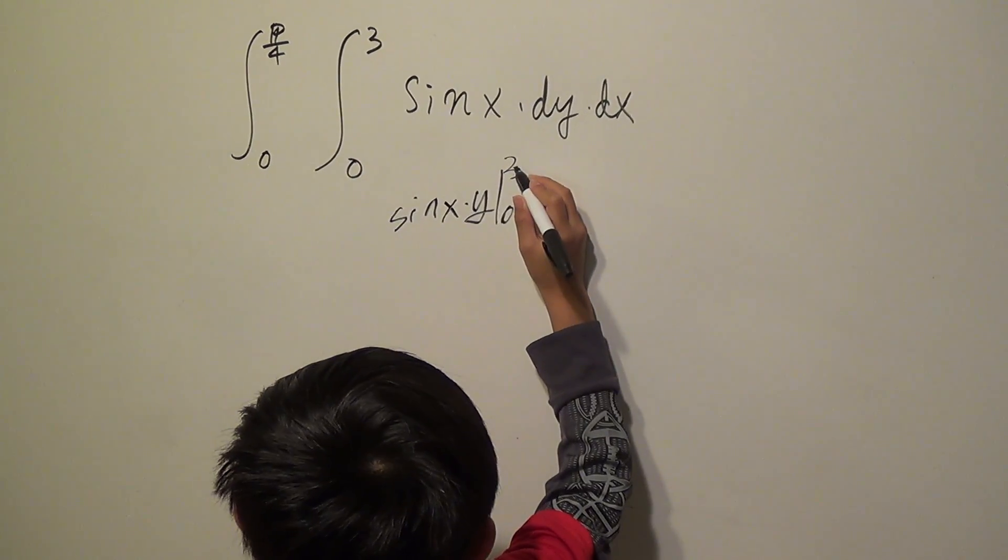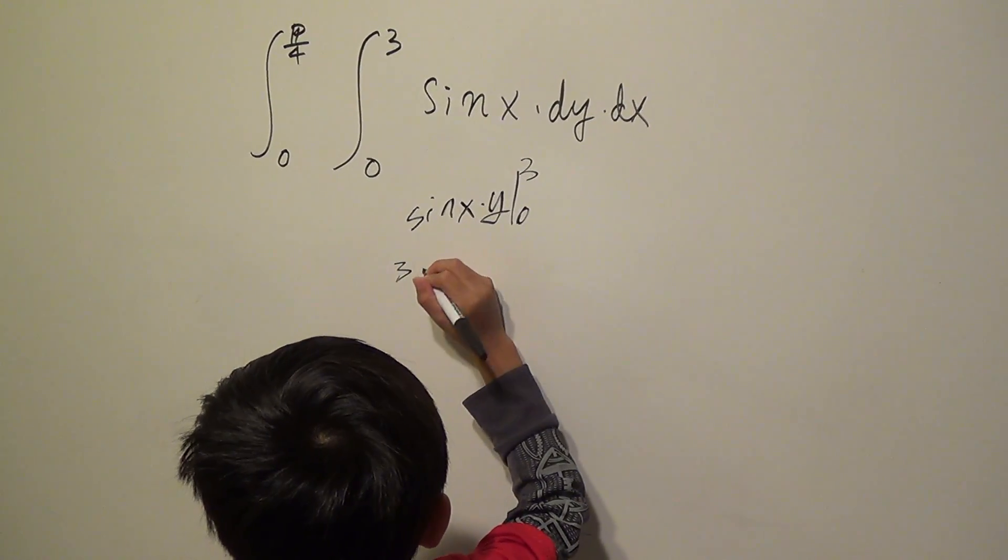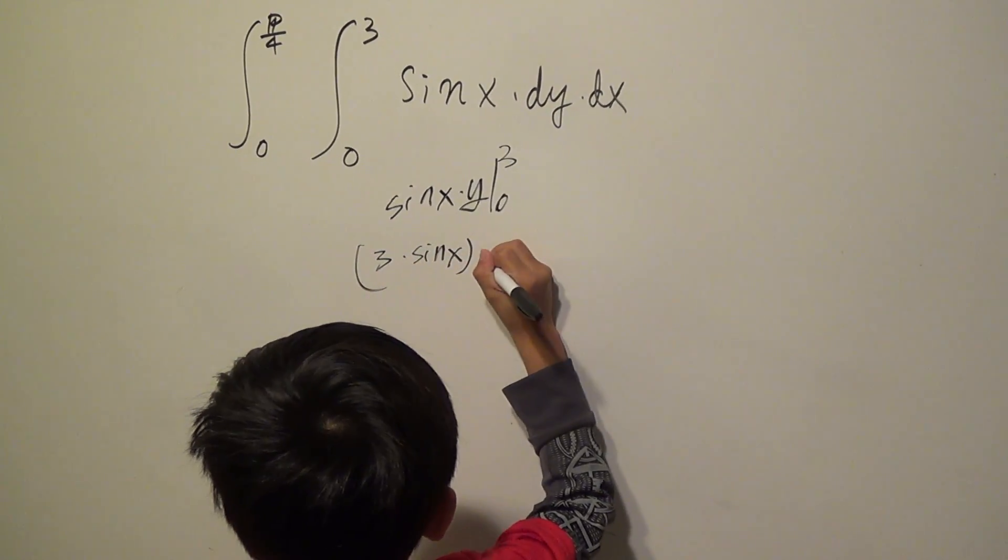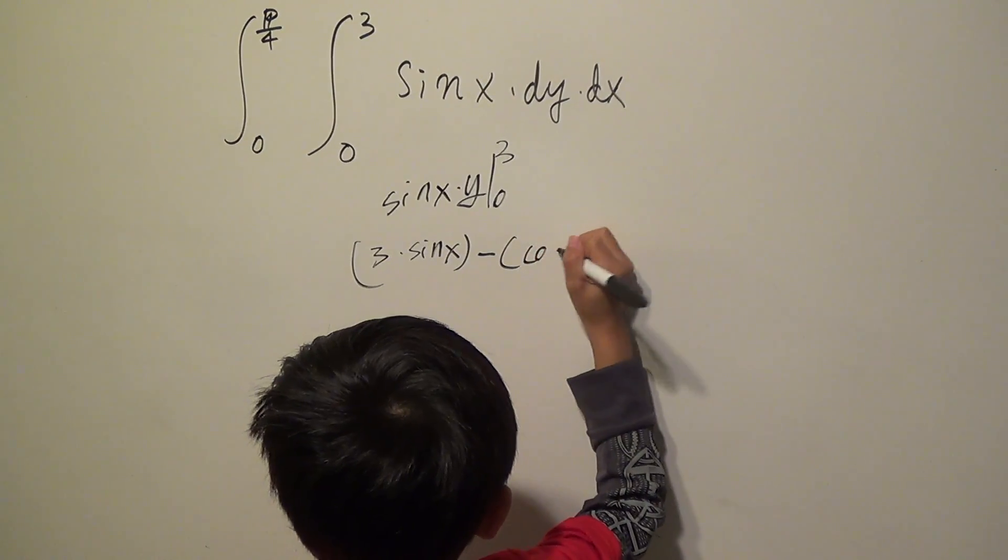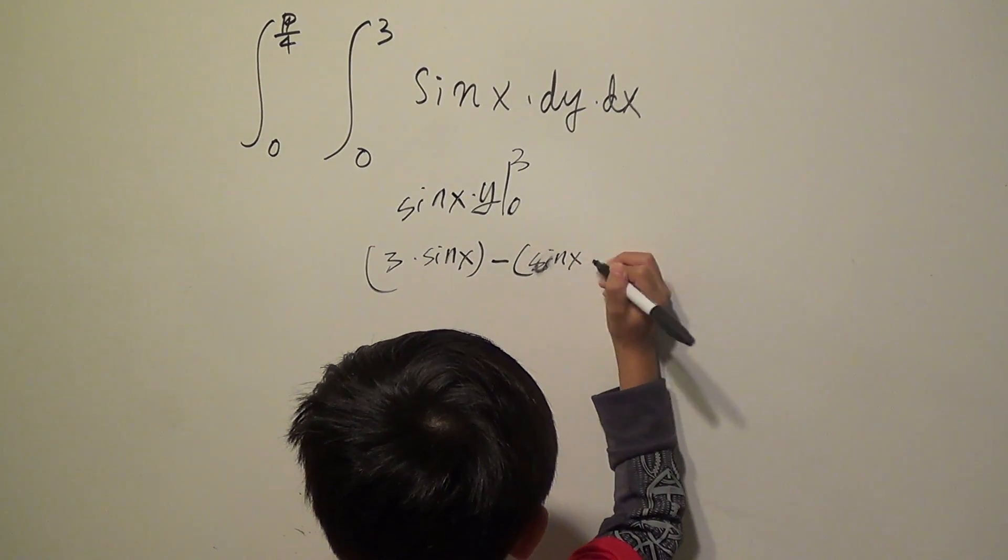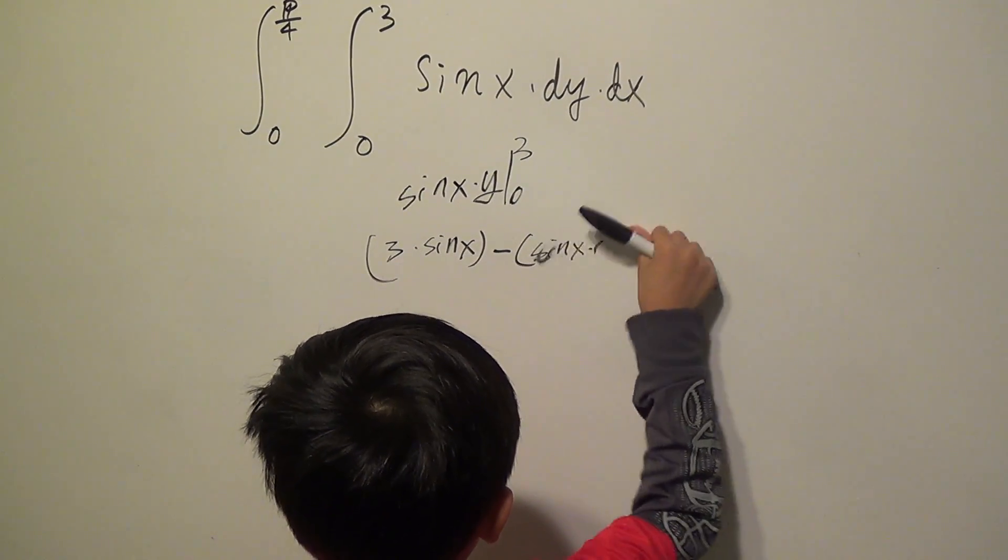So y has to change to 3 because of this, so I'll just put it right here, dot sin. Anything times 0 is pretty much 0, so you can erase this.